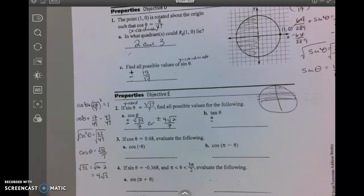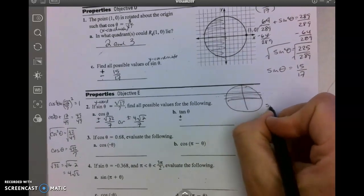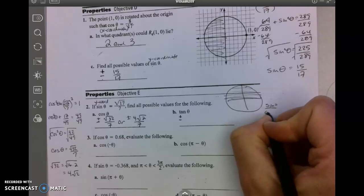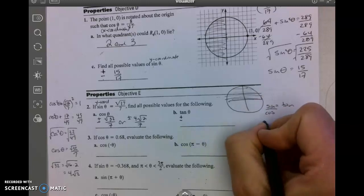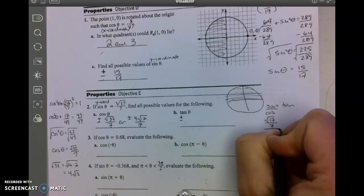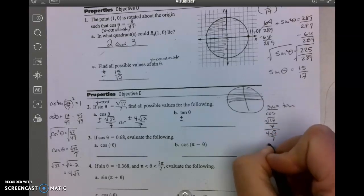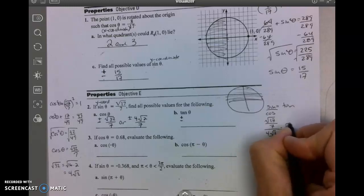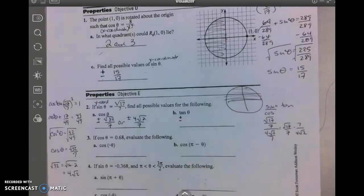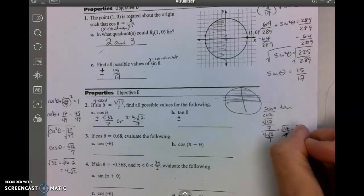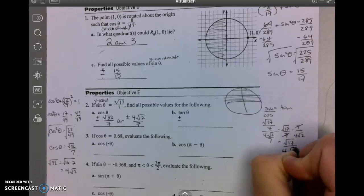The tangent is sine divided by cosine. So the tangent equals (√17/7) divided by (4√2/7), which means I'm going to multiply by the reciprocal. So I've got (√17/7) times (7/(4√2)). The 7's cancel and I'm left with √17/(4√2).